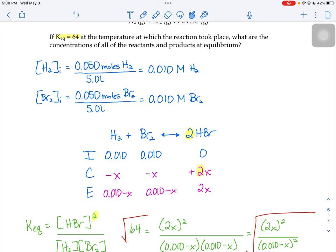The reactants are always going to decrease. The products are always going to increase. And so we have negative X on the left-hand side, positive 2X on the right-hand side.